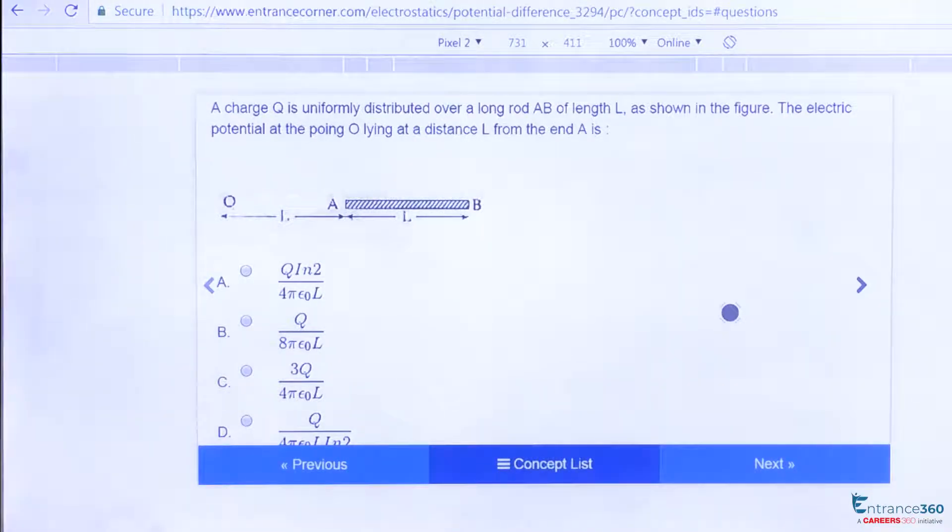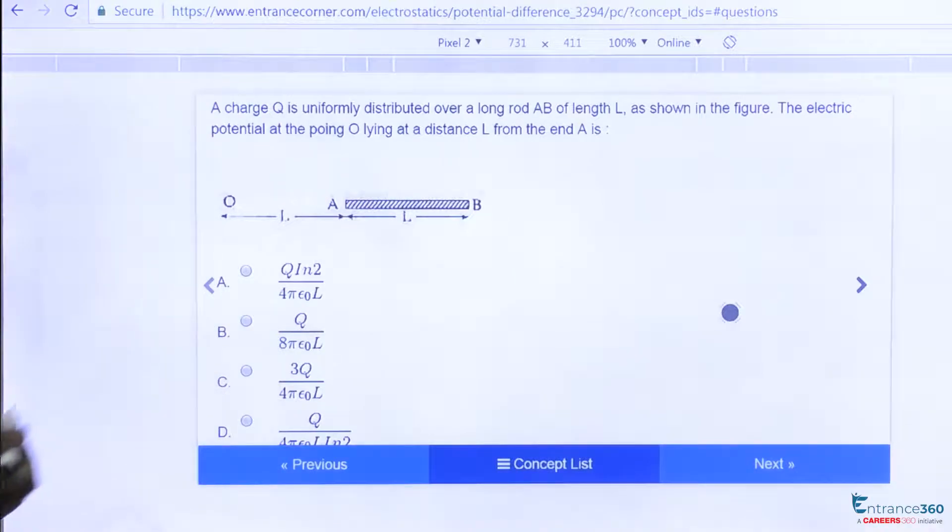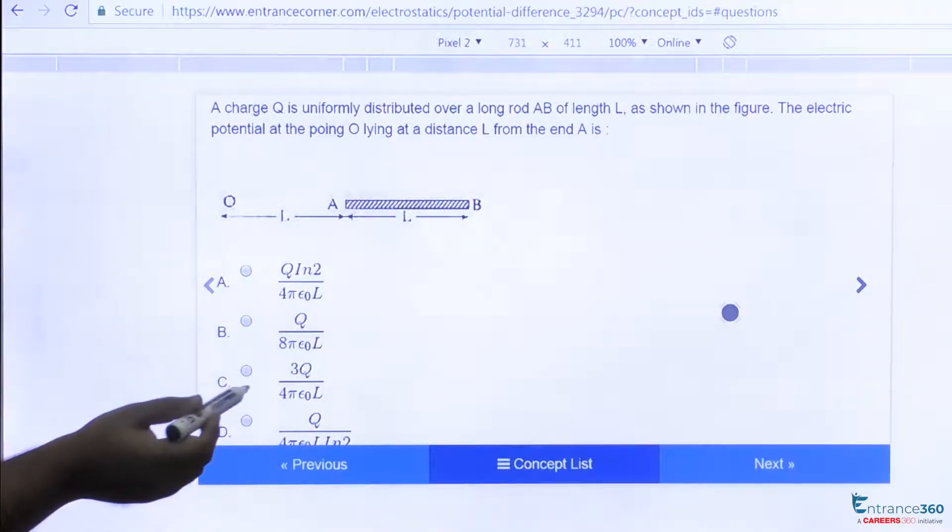Hello students, this is an interesting question from the chapter electrostatics which is asked in JEE Main 2013. The question says that we have a rod AB in which charge is distributed uniformly. We have to find potential at O due to this rod.